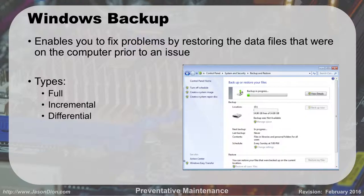When you do a full backup, it backs up every single file on the machine. When you do an incremental backup, it backs up everything since the last full backup. And when you do a differential backup, it does a backup of everything since the last differential backup.